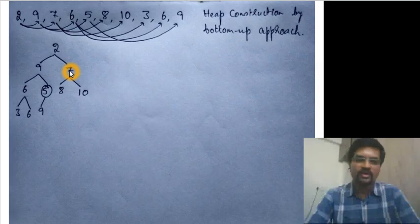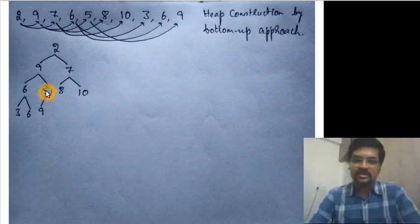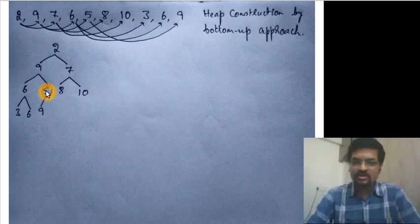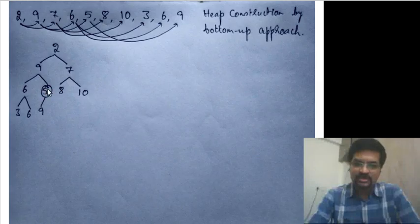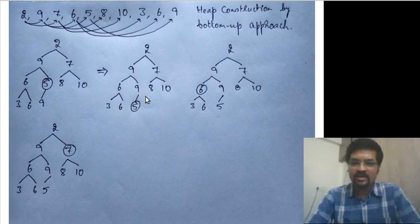We don't need to start from the very bottom because all leaves are heaps by themselves. So the first node we need to process is the last non-leaf node in the tree, which is always at the location floor of n by 2. The subtree starting from this node is not a heap because 9, the larger child, is greater than the node, so we pull it up. Now 9 comes to this place and 5 is below, making this subtree a heap.